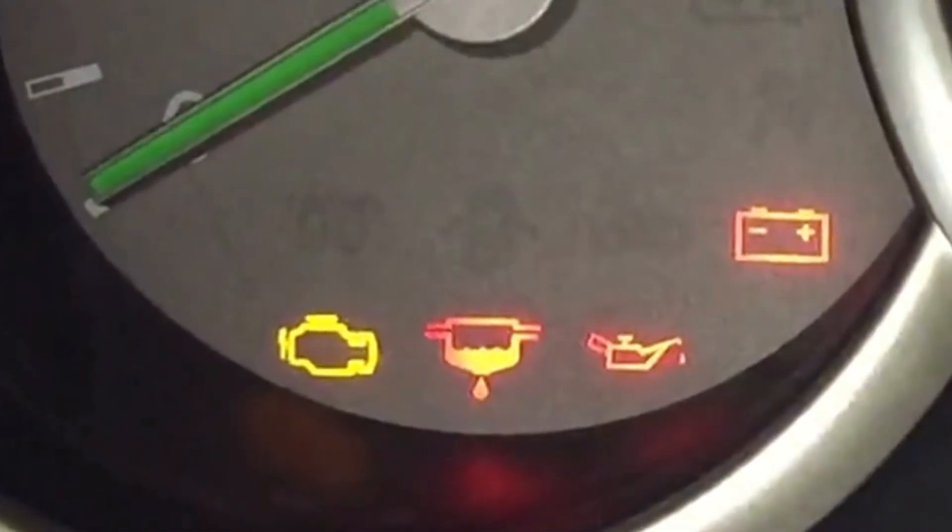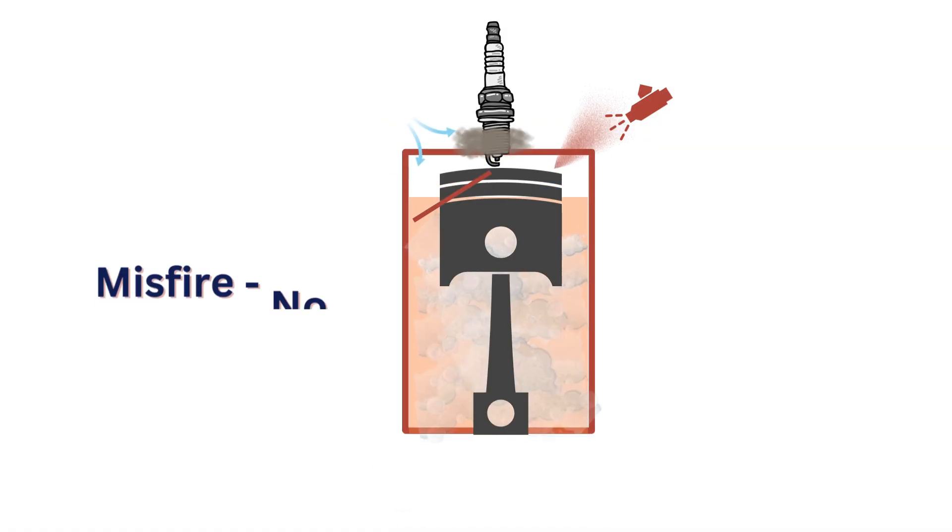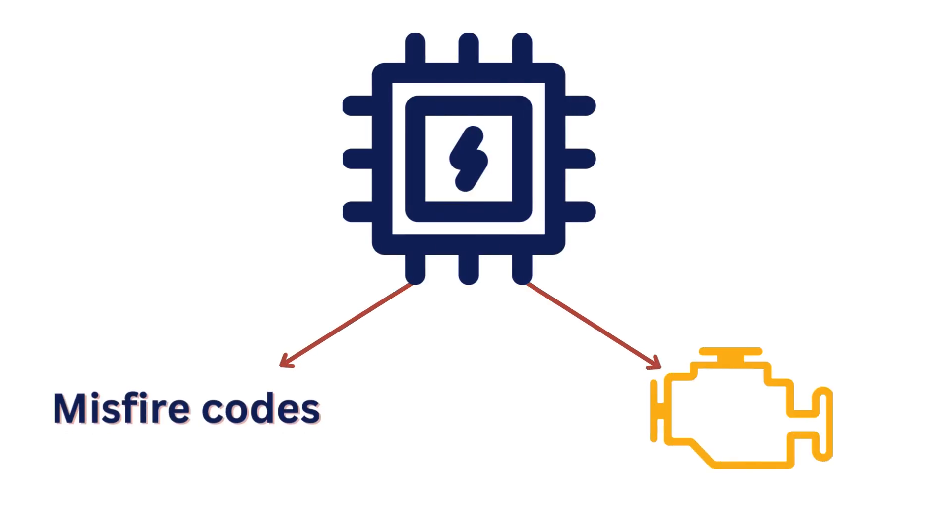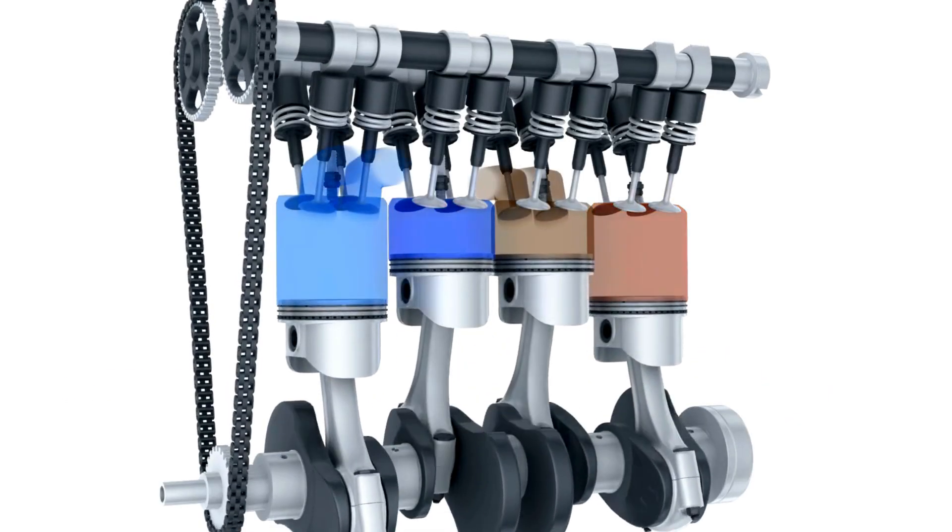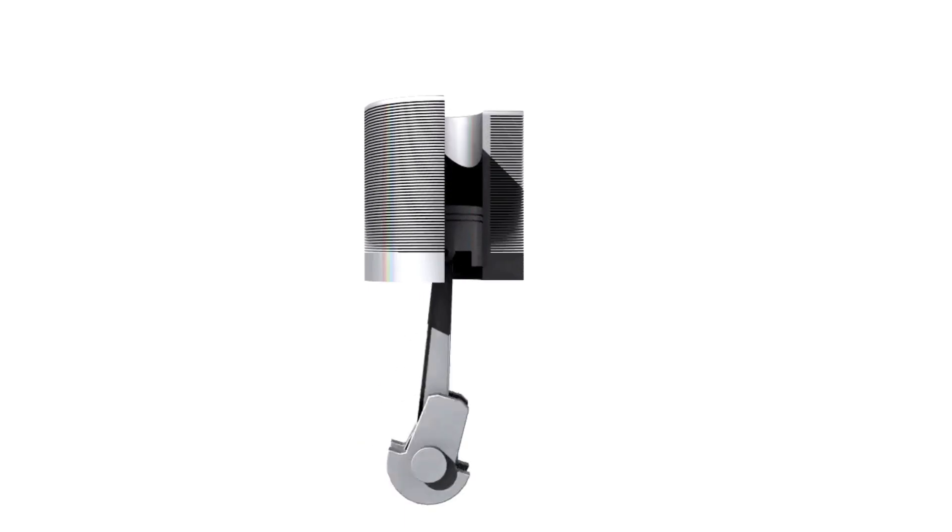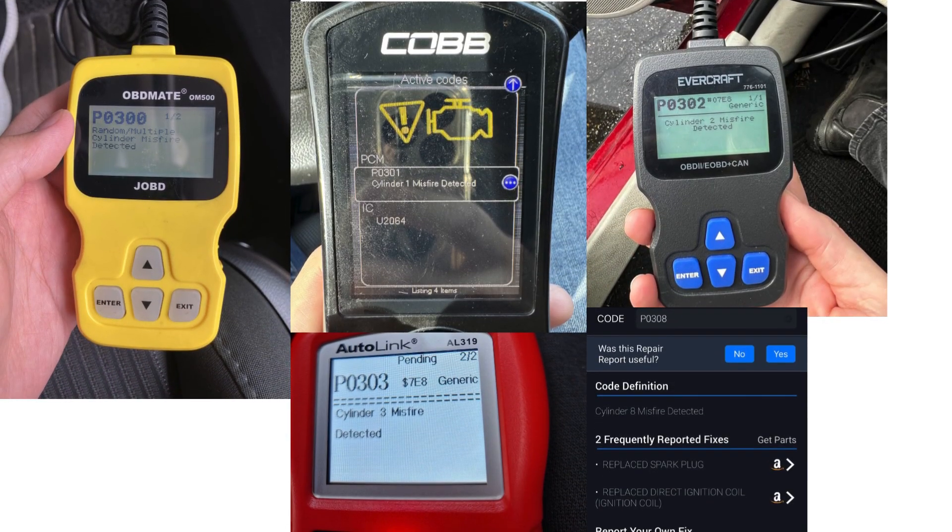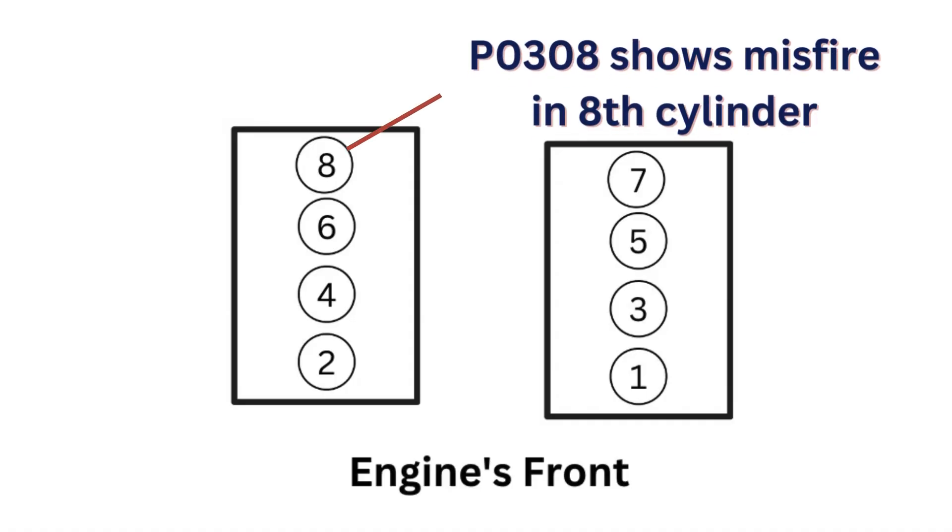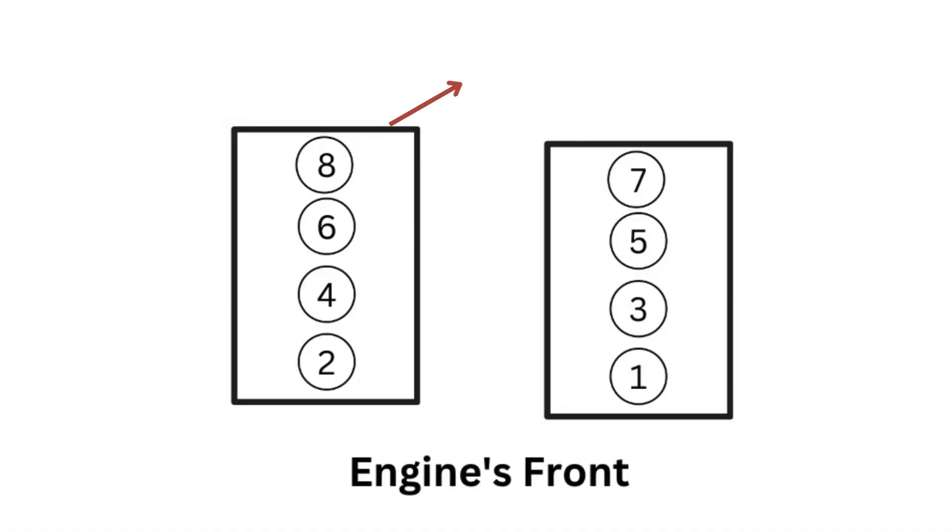The second symptom is a check engine light which is either steady or flashing. When there is a misfire due to a bad spark plug, the ECU stores misfire codes and turns on the check engine light. Misfire codes are either random or related to the cylinder in which the misfire is occurring. They range from P0300 to P0308. P0300 shows random misfires, while P0308 shows a misfire is occurring in the 8th cylinder.